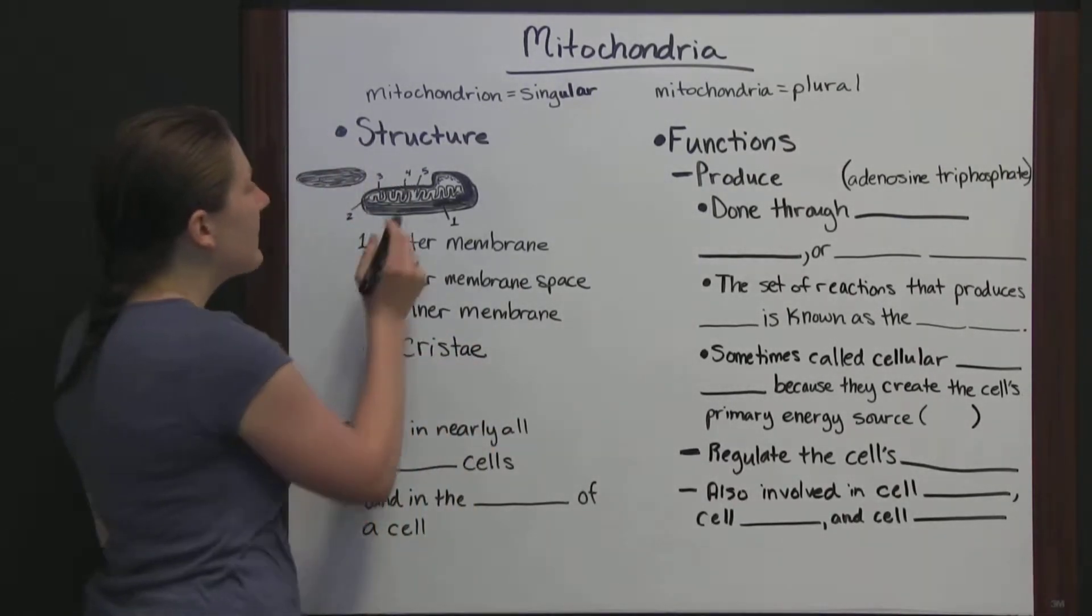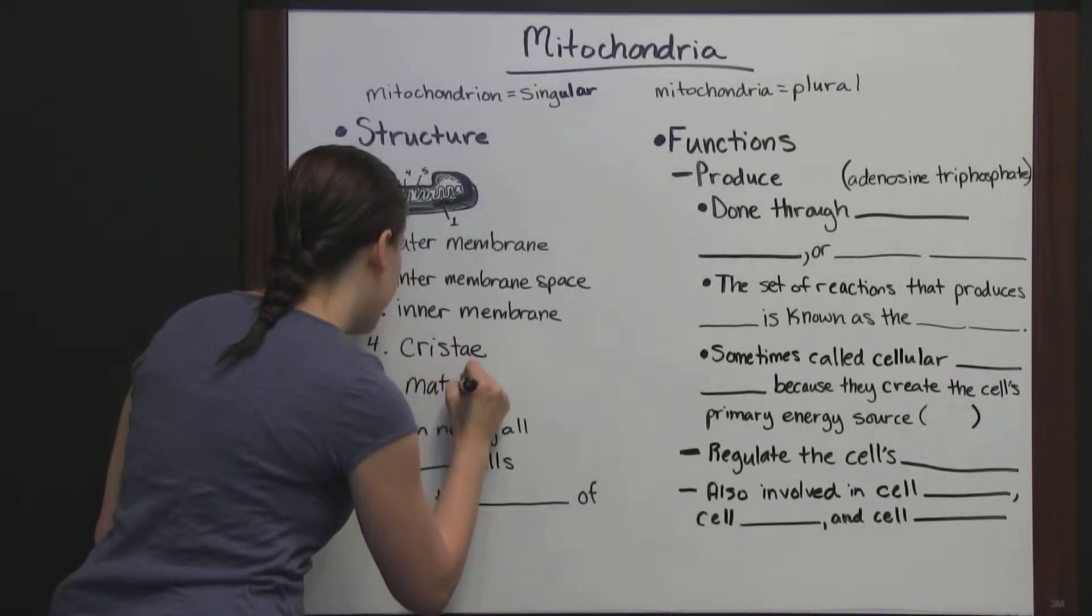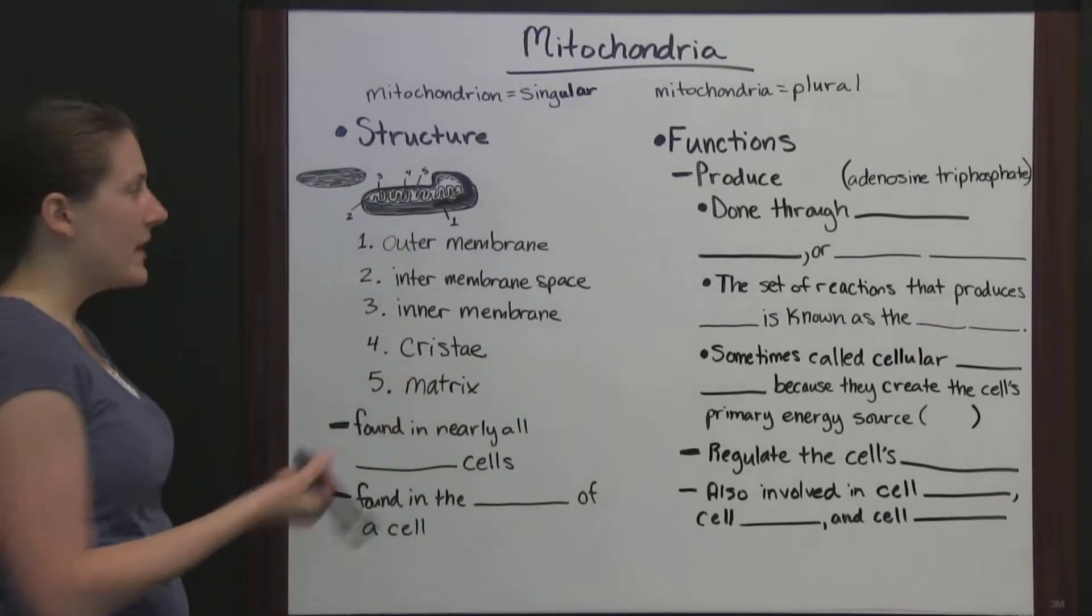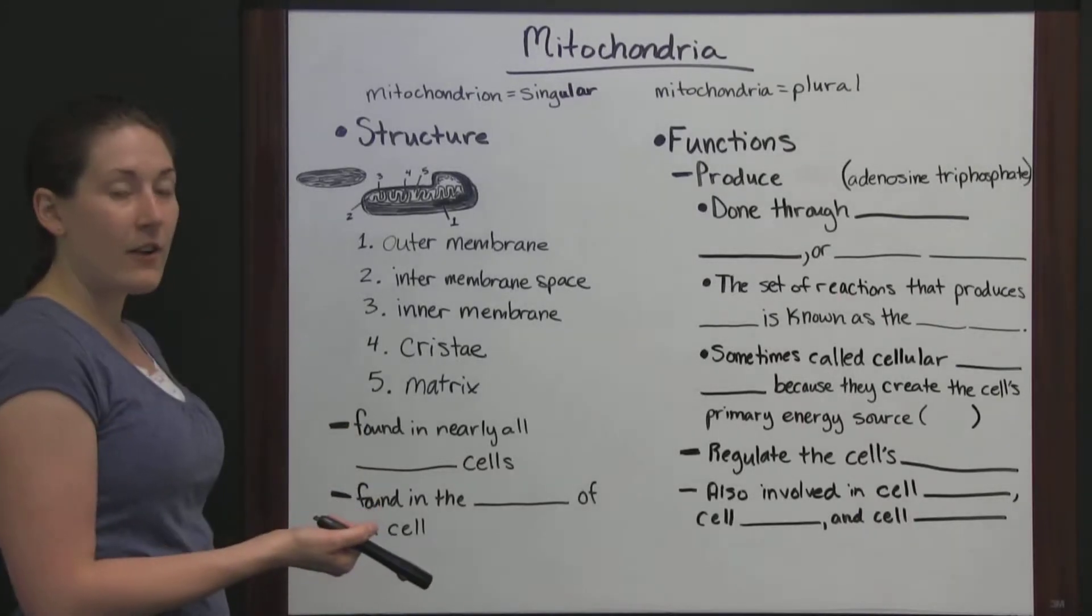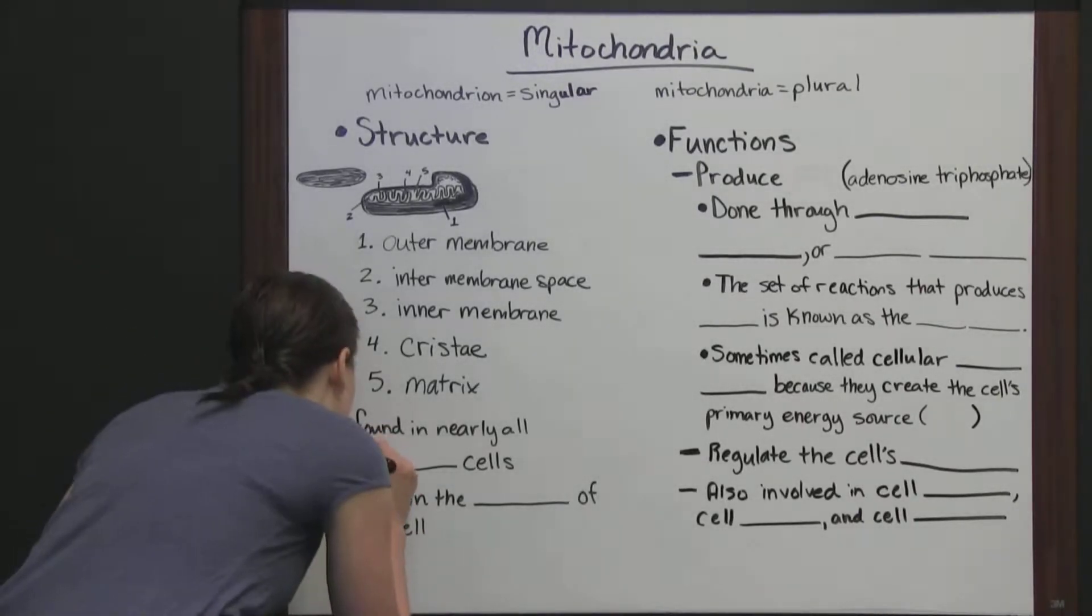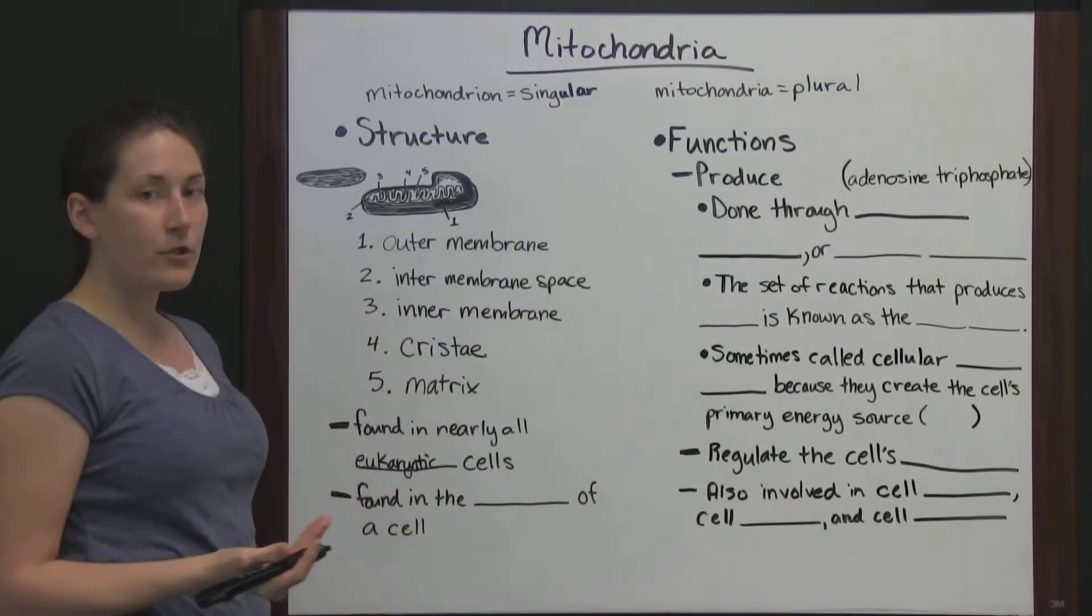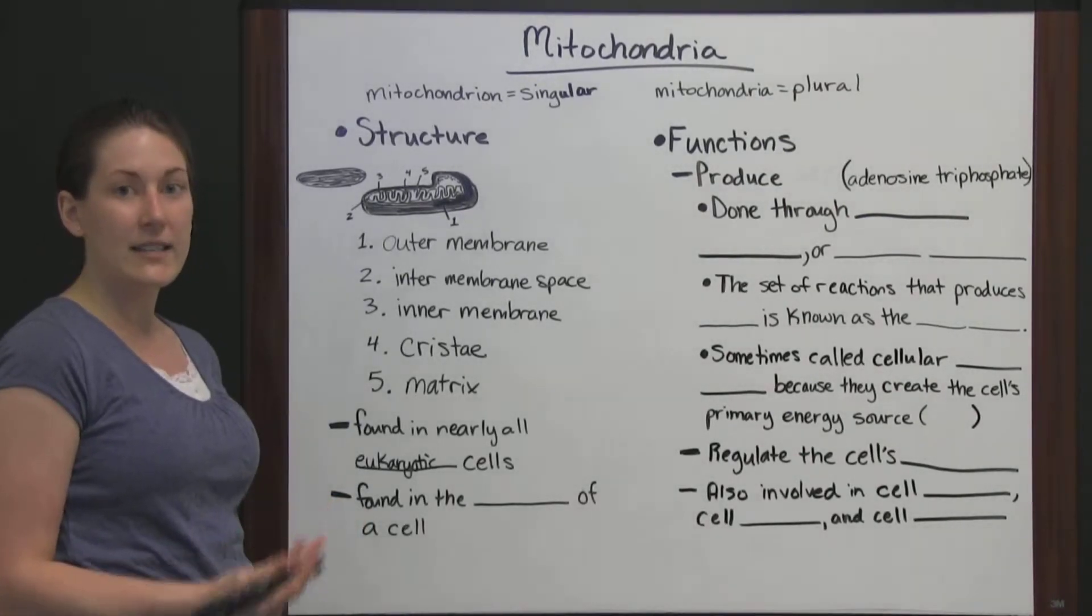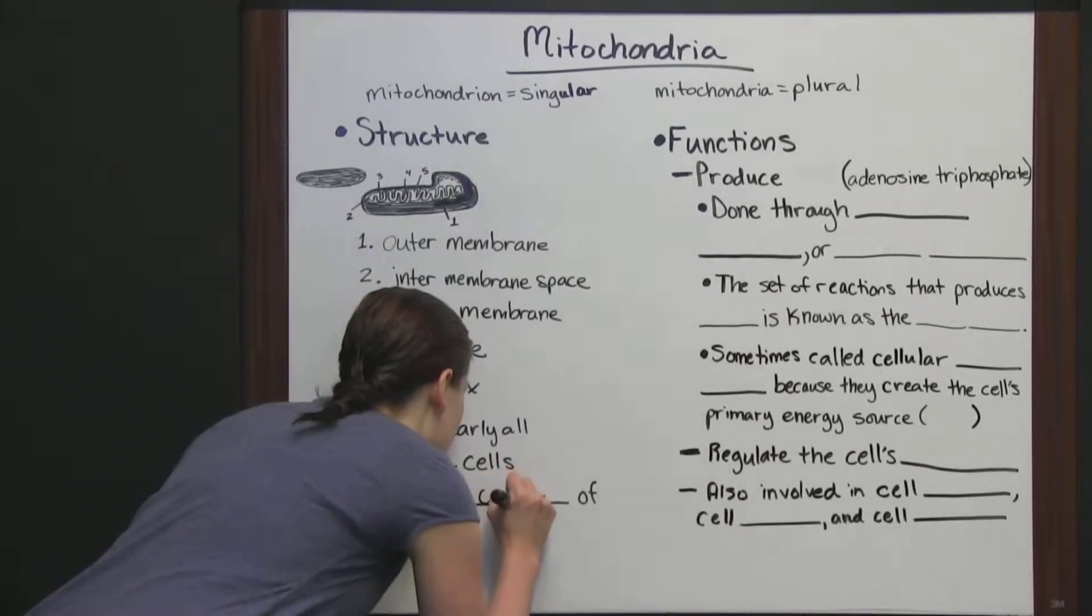And then, last but not least, everything inside that inner membrane is called the matrix. So, there you've got your structure of a mitochondrion, the basic parts of it, and it's important to know that they are found in nearly all eukaryotic cells. So, that's not all, but most eukaryotic cells, and that's going to be your larger cells, the ones you find in plants and animals. And within the cell, it's going to be found in the cytoplasm.